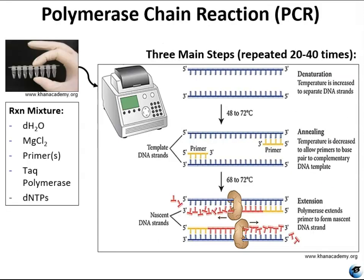PCR occurs over multiple cycles, each containing three steps: denaturing, annealing, and extension. Machines called thermocyclers are used for PCR. These machines can be programmed to cycle through these three steps multiple times, usually somewhere between 20 to 40 times, but typically closer to 30.